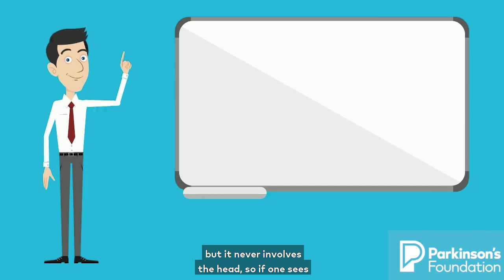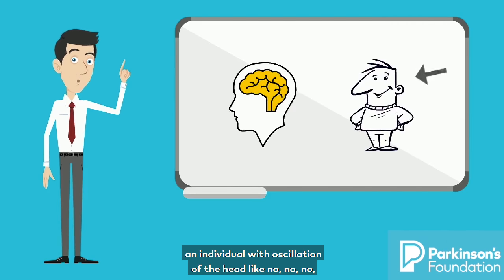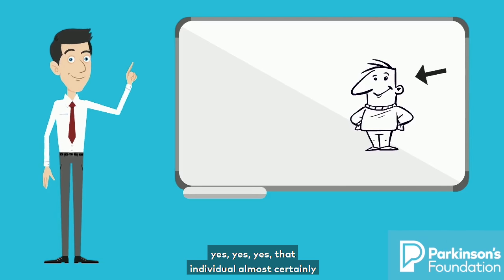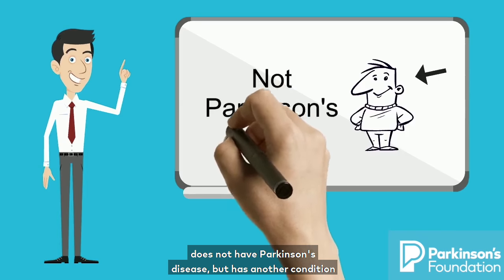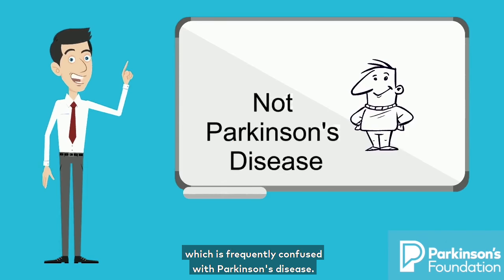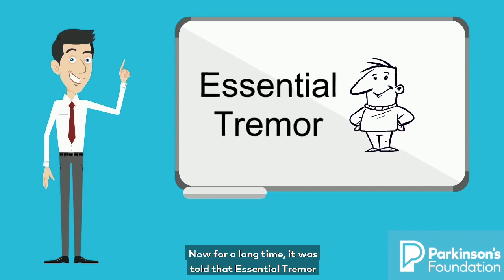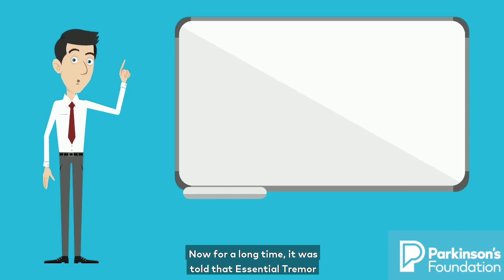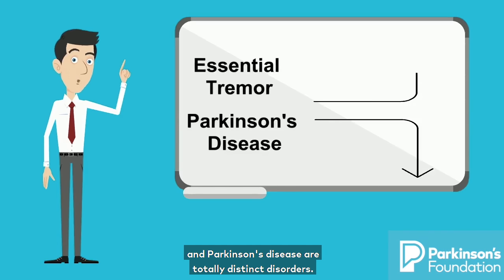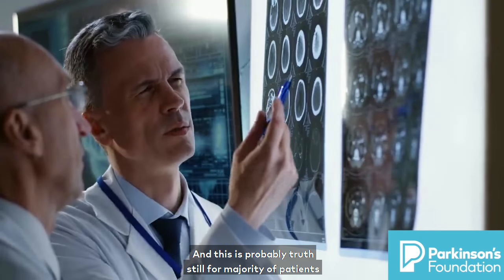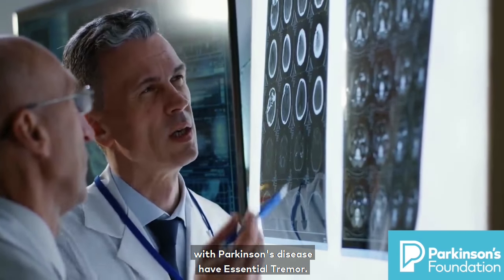So if one sees an individual with oscillation of the head — like no-no-no or yes-yes-yes — that individual almost certainly does not have Parkinson's disease, but has another condition, namely essential tremor, which is frequently confused with Parkinson's disease. For a long time it was thought that essential tremor and Parkinson's disease are totally distinct disorders, and this is probably still true for the majority of patients.